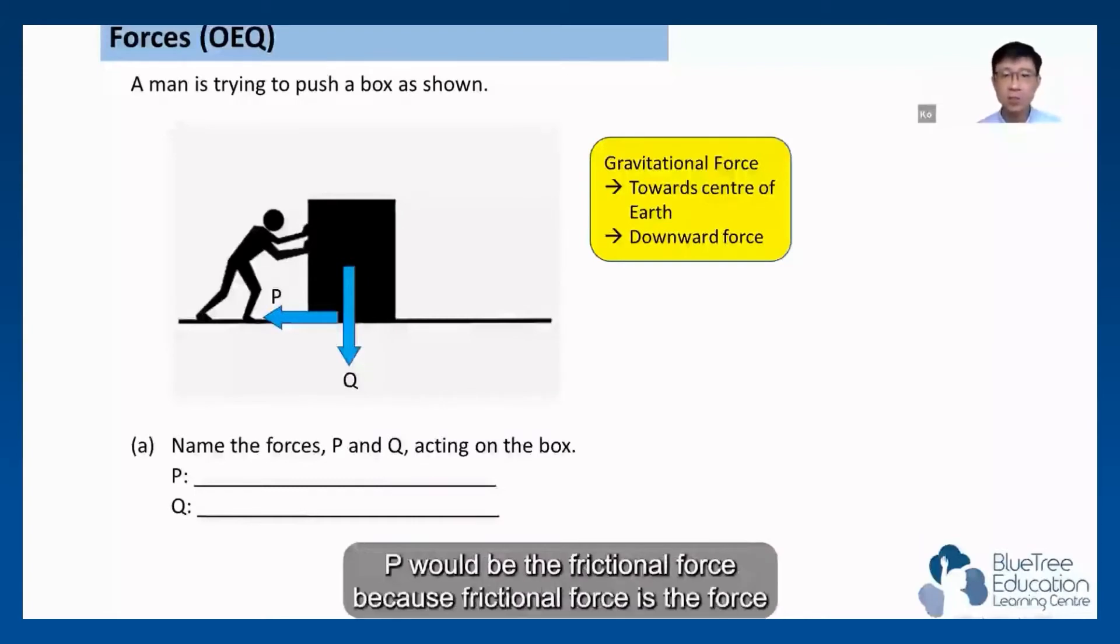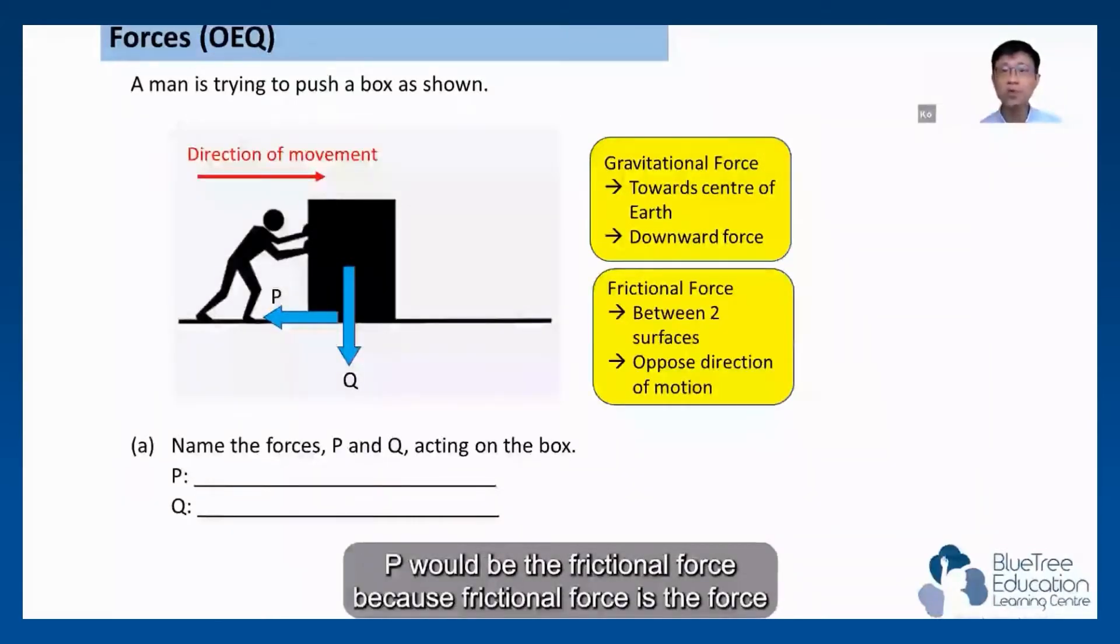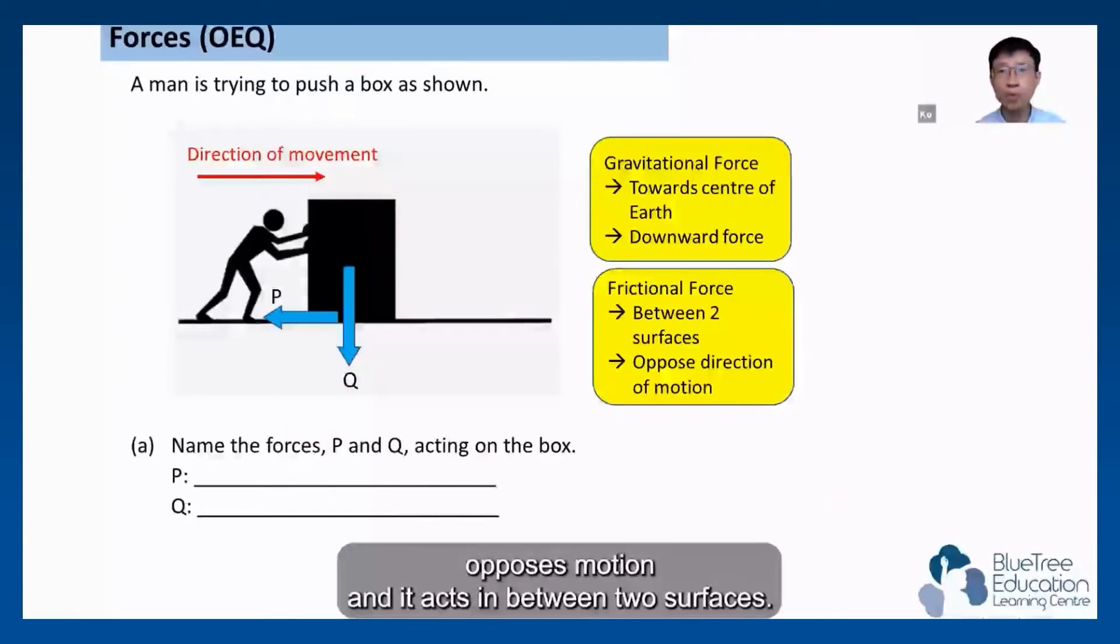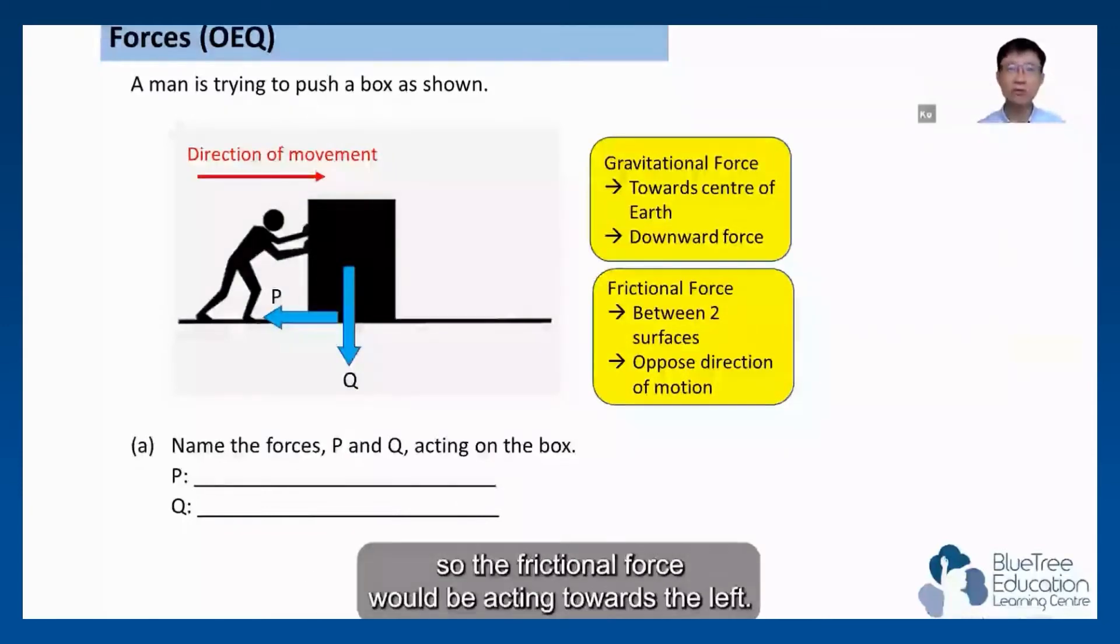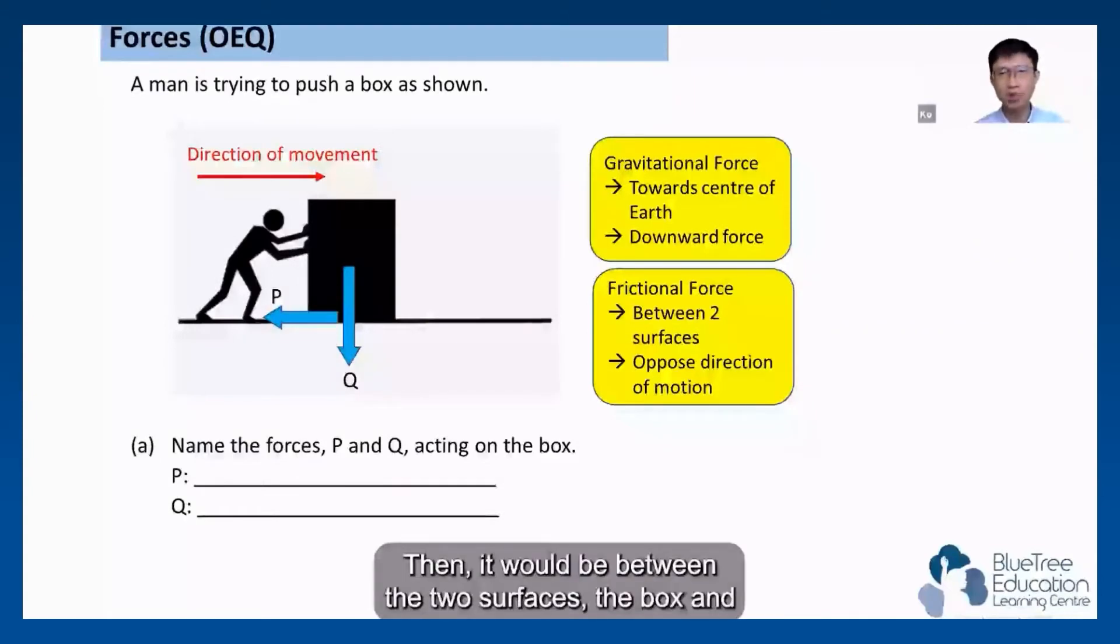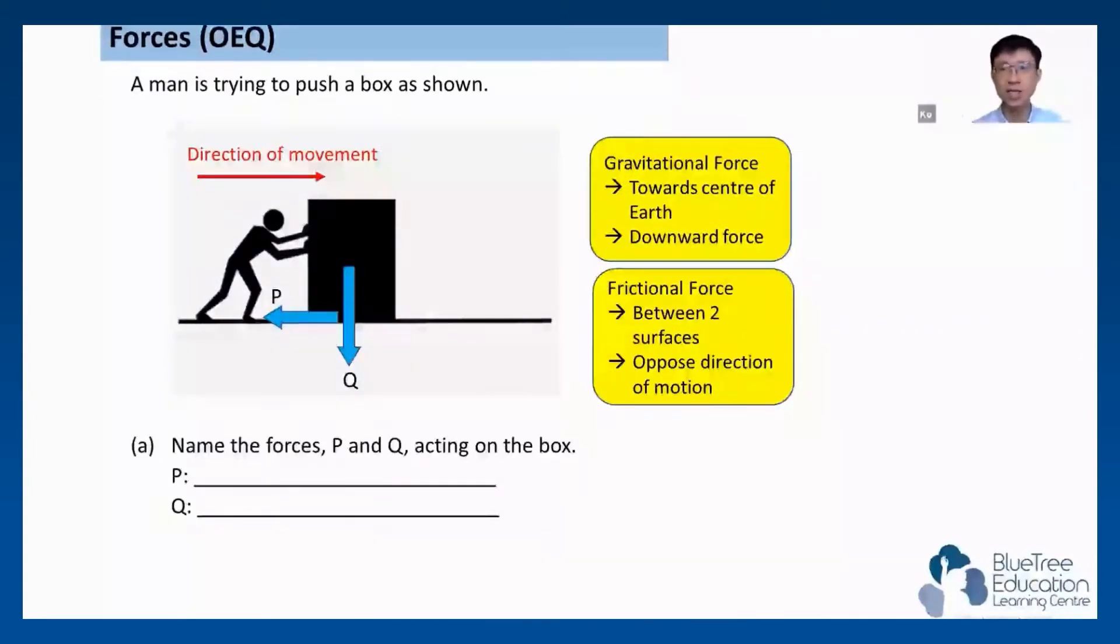But how about P? P would be the frictional force because frictional force is the force that opposes motion and acts between two surfaces. Now this box is being pushed to the right, so the frictional force will be acting towards the left and it will be between the two surfaces, the box and the ground.